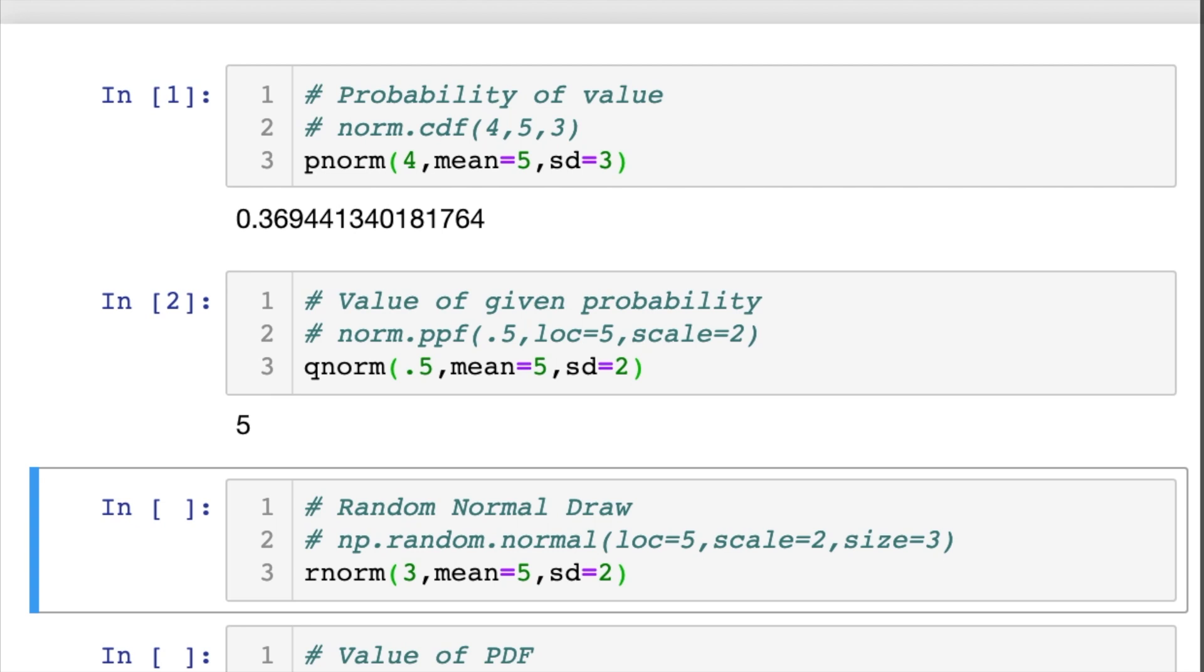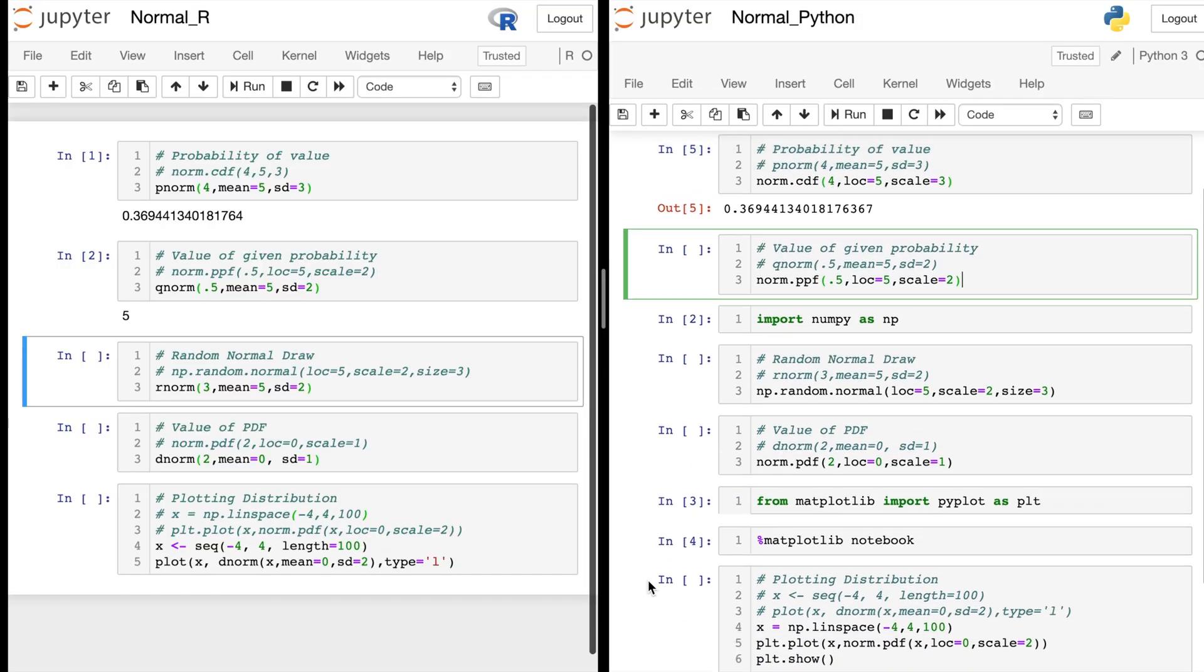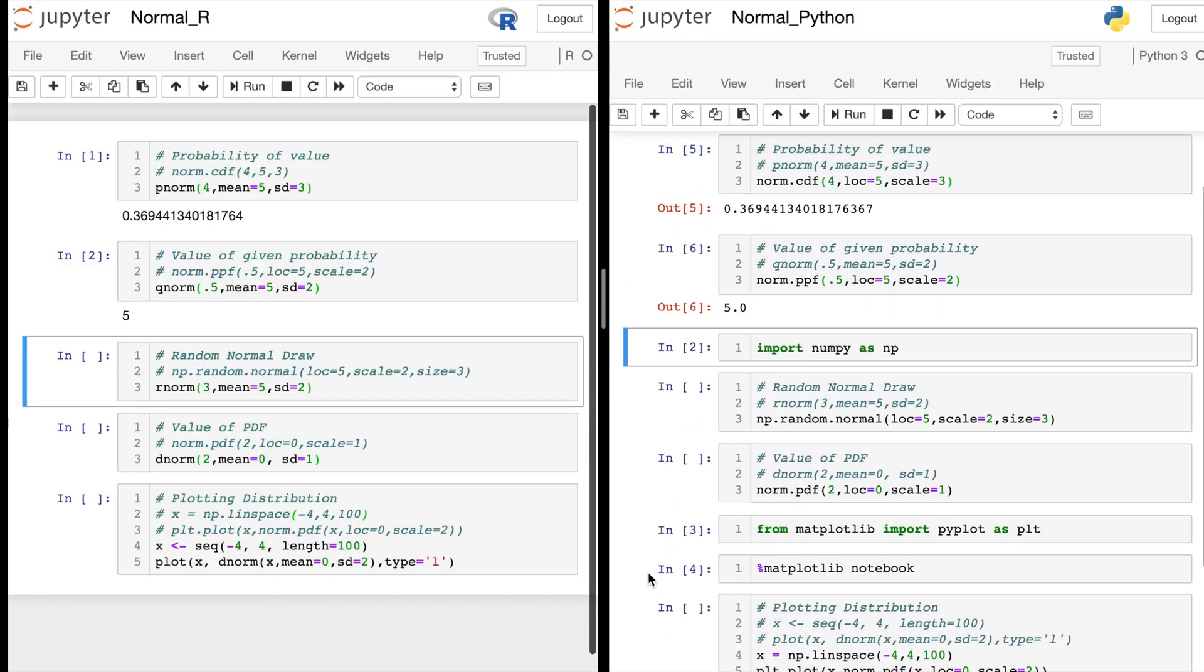In Python to do this, you can see in my comment there, norm.ppf. So you can give it 0.5, loc equals 5, and scale equals 2. So it will have the same mean and standard deviation. Let's run this in Python, and we get 5.0. Just like we did in R, we got 5.